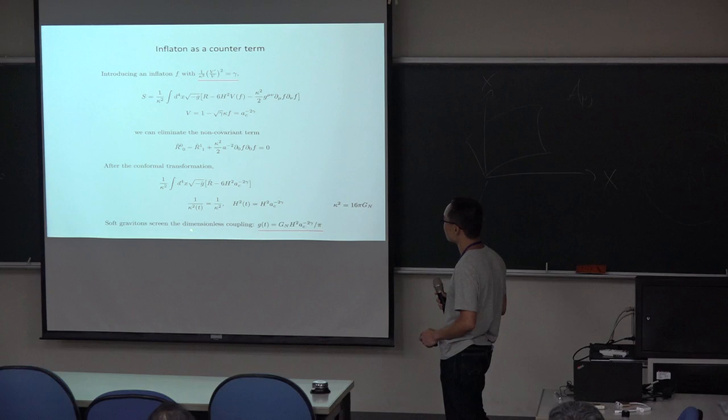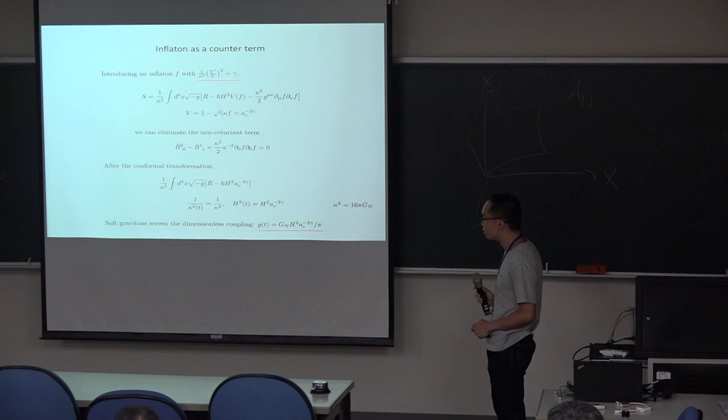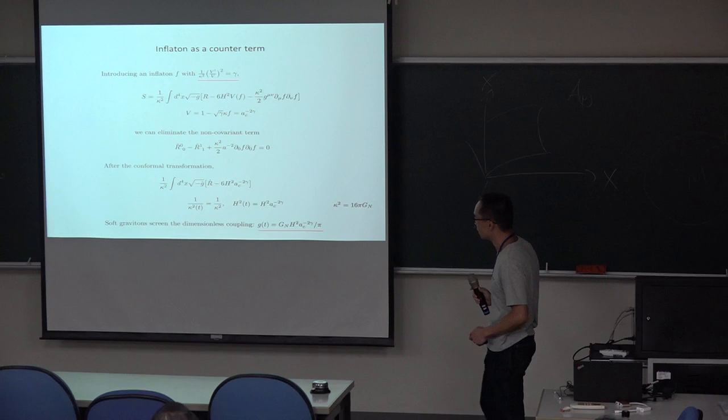And eliminating the non-covariance term, we can obtain the complete covariant effective action. From this effective action we can evaluate the decay of the Hubble parameter. Decay of the Hubble parameter means instability of the de Sitter space.